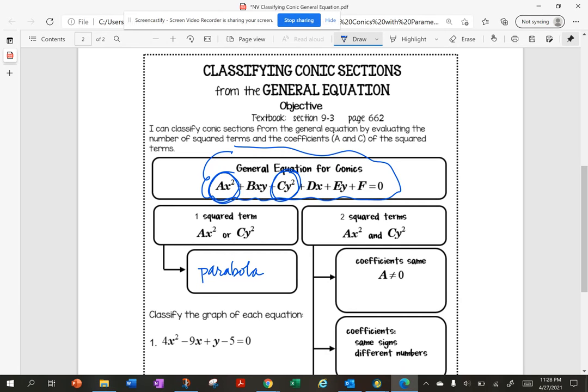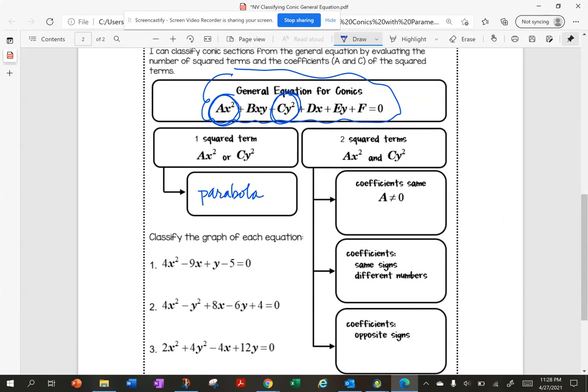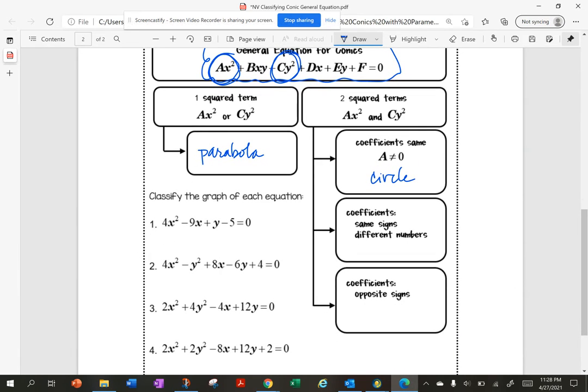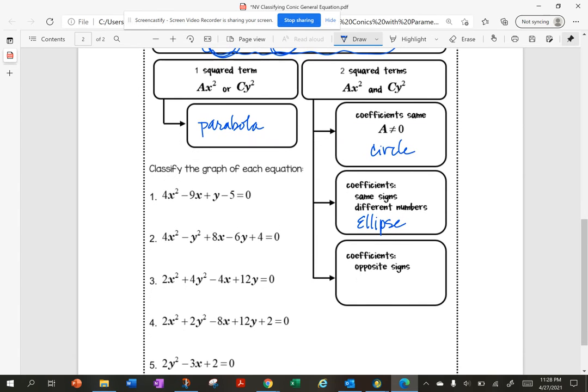If I have both squared terms and the coefficients are the same but not zero, then I have a circle. And if I have the same signs but different numbers, I have an ellipse. And when the coefficients are opposite signs, then I know I have a hyperbola.